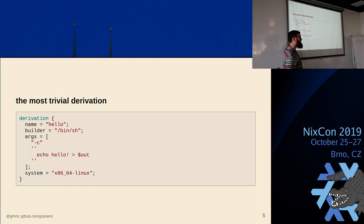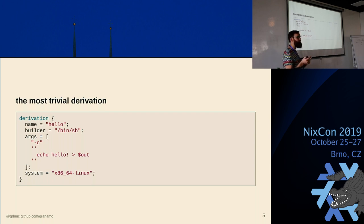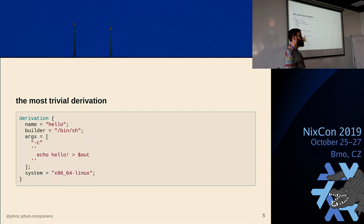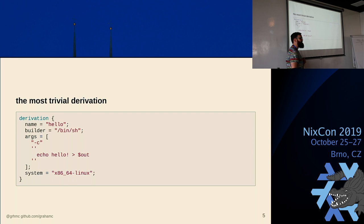The final value in the derivation is system. System describes your local system — Nix has a concept of what operating system and architecture you're on. So you might see i686-linux, or x86_64-darwin for macOS. Maybe one day we'll see a riscv-linux or a power9-linux.